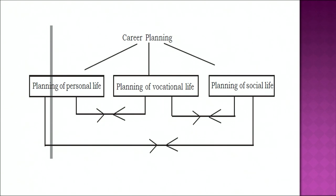Planning of personal life involves planning about when to get married, what type of person you would like to marry, when to have children, and what sort of life you want to give to your spouse and children. People tend to decide the person to marry according to their career — for example, a teacher may prefer to marry someone in the same profession. People also tend to have children only when they feel established in their careers. This indicates that planning of personal life is closely linked to career planning.